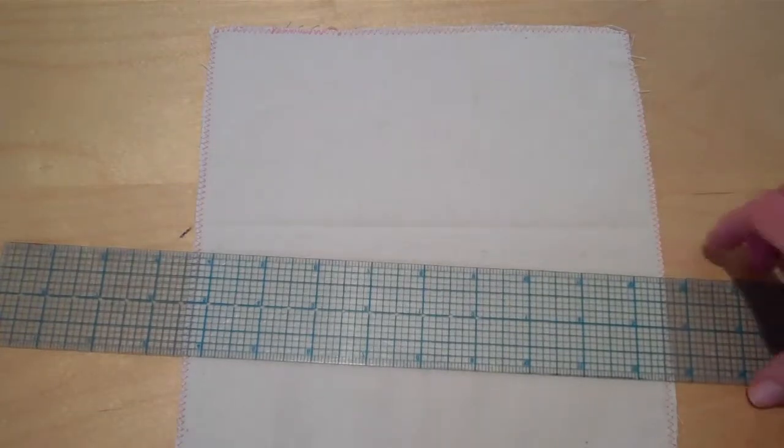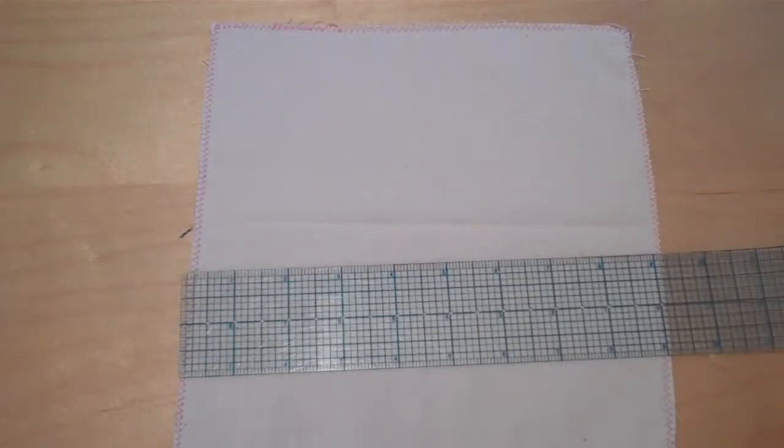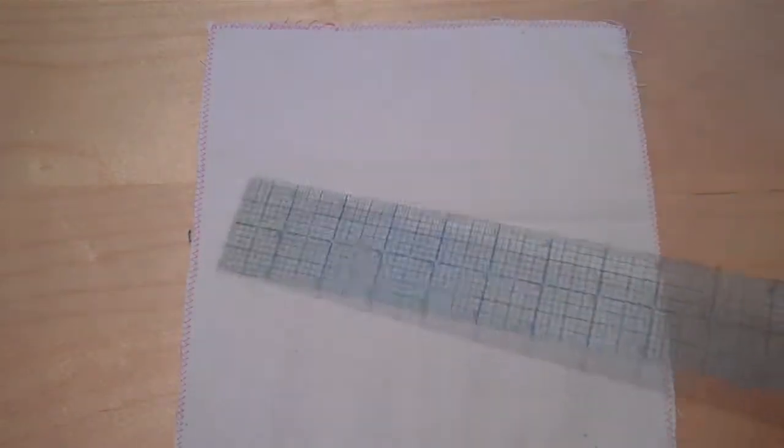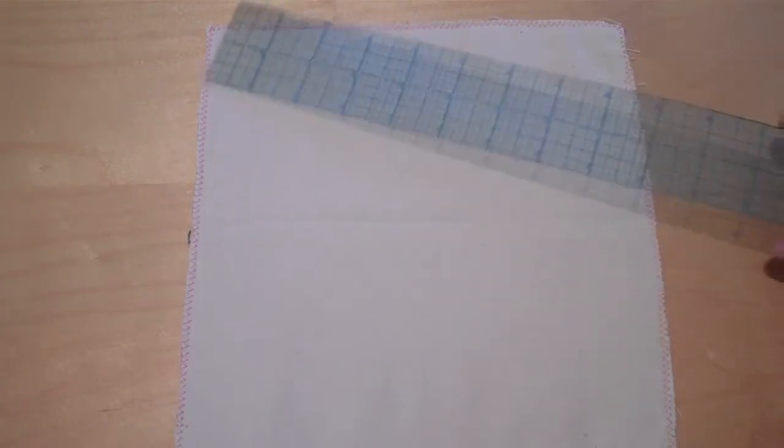The first thing you'll do is cut a 9 by 9 inch square. Because our embroidery hoop is 6 inches, the 7 by 7 inch square will be too small. So measure off a 9 by 9 inch square and then finish the edges with a zigzag finish so it does not unravel.